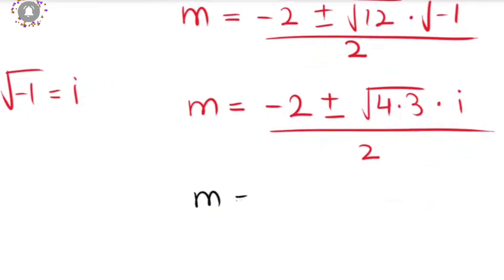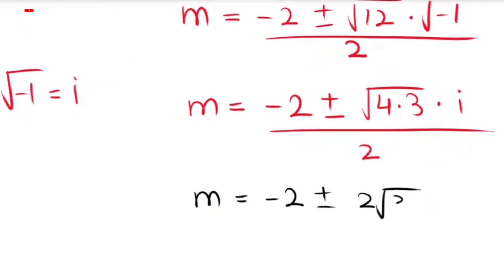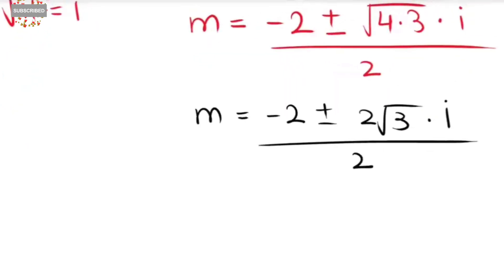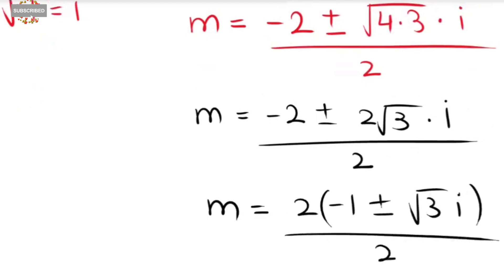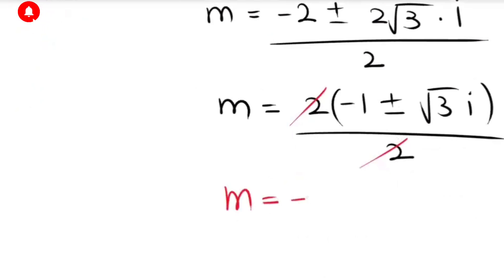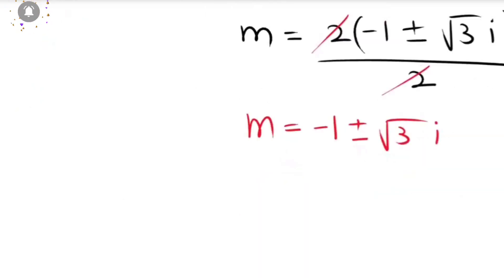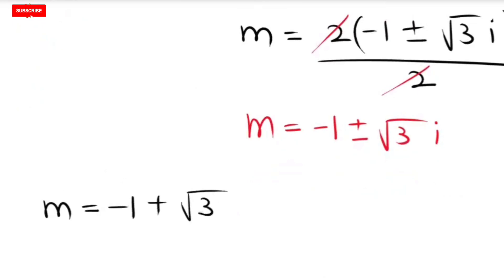So m equals negative 2 plus or minus, and I write 12 as 4 times 3, so root of 12 becomes 2 root 3, times i, over 2. Taking a common factor of 2: m equals 2 times (negative 1 plus or minus root 3 times i), over 2. The 2s cancel, so m equals negative 1 plus or minus root 3 times i.